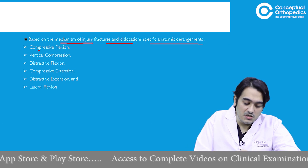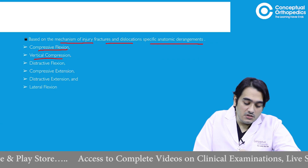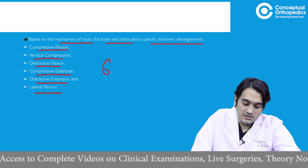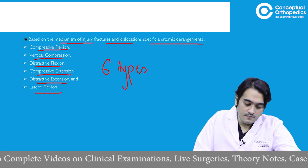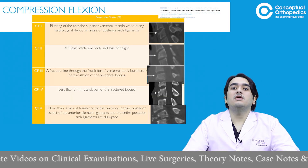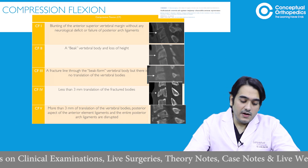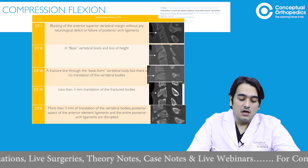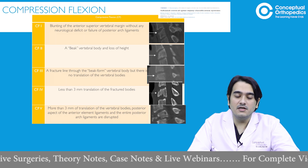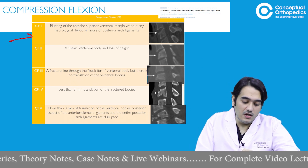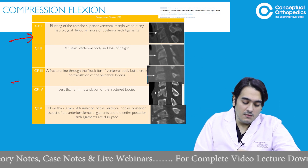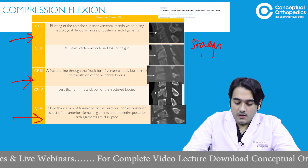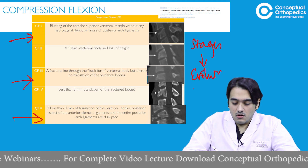These derangements can be: compression flexion, vertical compression, distractive flexion, compression extension, distractive extension, and lateral flexion — six types in total. Each type is subdivided into different stages representing how the injury progresses. If less force is involved the patient may present with stage one; with greater force it may progress to stage three or even stage five. These stages represent the evolution of the fracture pattern as force increases.